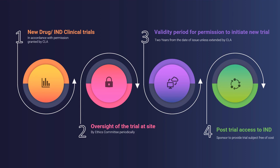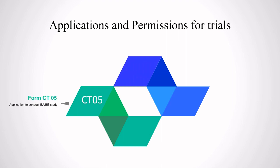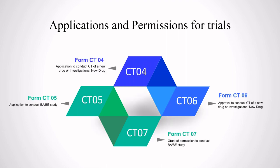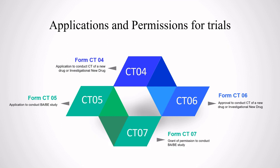There are specific application forms for permissions to conduct clinical trials. Form CT04 is the application to conduct a clinical trial for a new drug or investigational new drug, and the approval or permission is granted in Form CT06. So you apply using Form CT04 and receive approval in Form CT06. If you want to apply for a BA/BE trial, you fill Form CT04 and receive approval in the form of Form CT07.